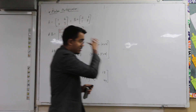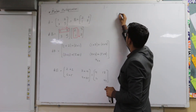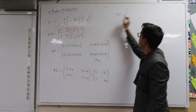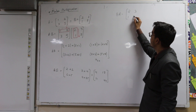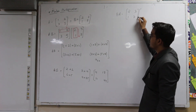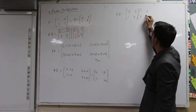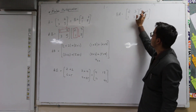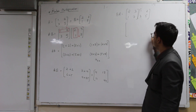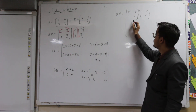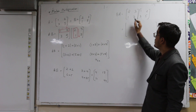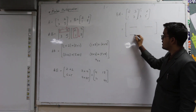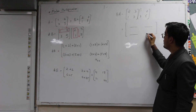Now let me solve BA and we will conclude something from this also. I will write B and A respectively. B is the matrix with elements 2, 3, 1, 7 and A is 1, 2, 3, 5. Again we follow the same rule: first row first column fills the first position, first row second column fills the second, second row first column fills the third, and second row second column fills the fourth.